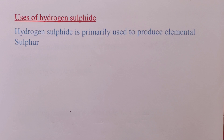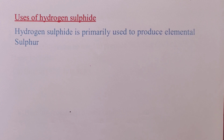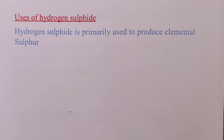That does it for the production of hydrogen sulfide. Hydrogen sulfide is primarily used to produce elemental sulfur. Once we have obtained elemental sulfur from hydrogen sulfide, we can use sulfur to, among other things, vulcanize rubber or in the contact process to produce sulfuric acid. We are through with the lab preparation, setups, and uses of hydrogen sulfide gas.